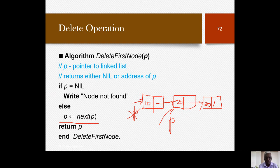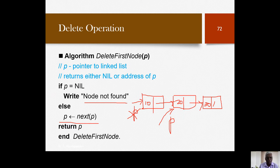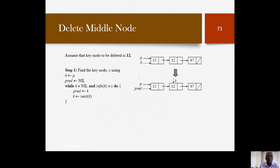We need to first check that there is at least one node in the singly linked list, because simply executing p equals next of p when p is null will cause a runtime error — you cannot access any fields of a null pointer. If p is null, we say the list is empty. Otherwise, we execute p equals next of p and return the updated value of p.